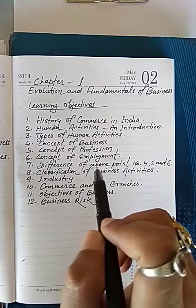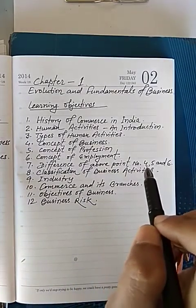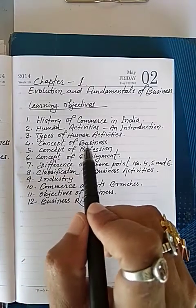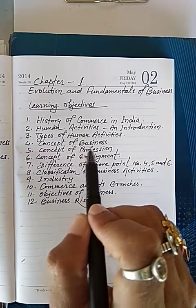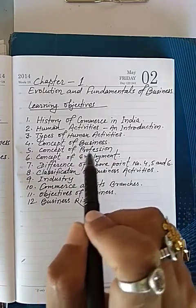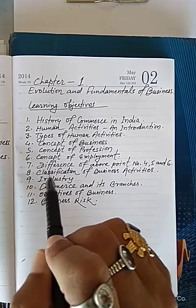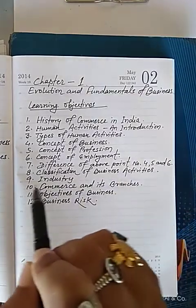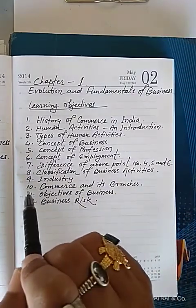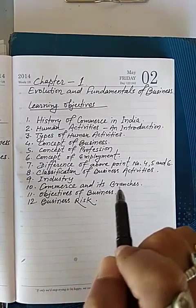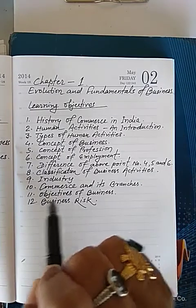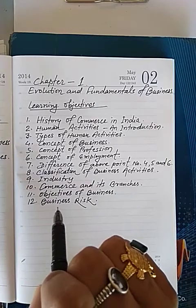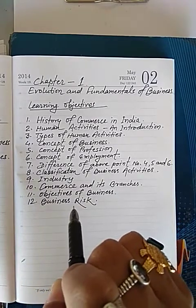Sixth learning objective is concept of employment. Seventh is the difference among business, profession, and employment. Eighth point is classification of business activities — industry. Tenth point, commerce and its branches. Eleventh, objective of business. And twelfth point will be business risk.